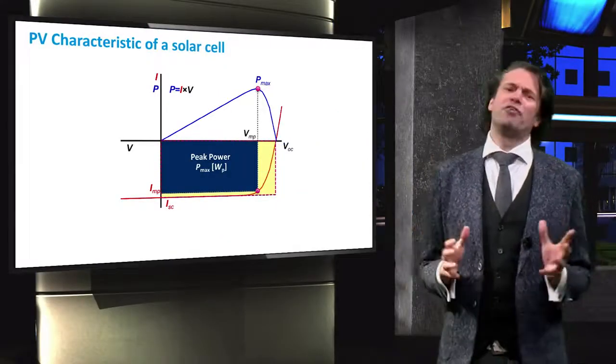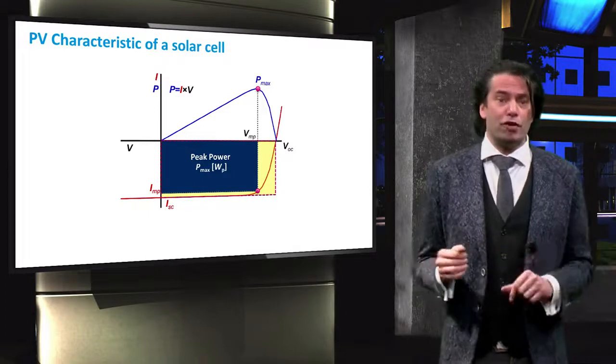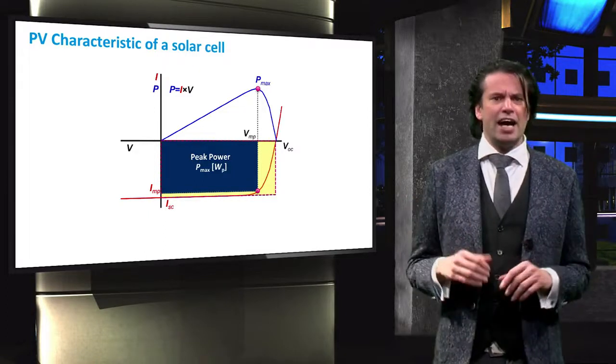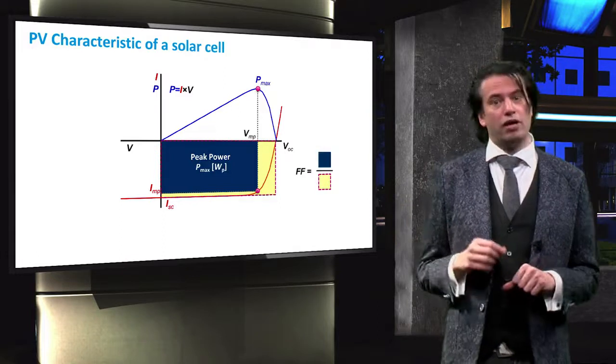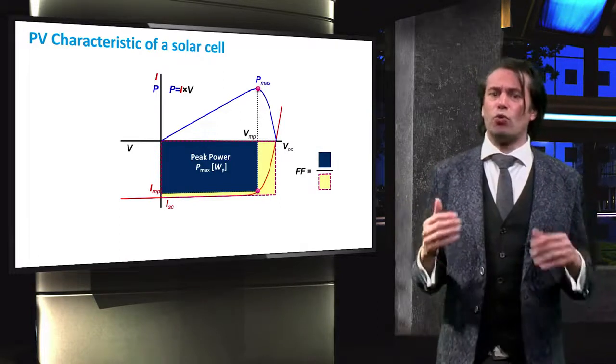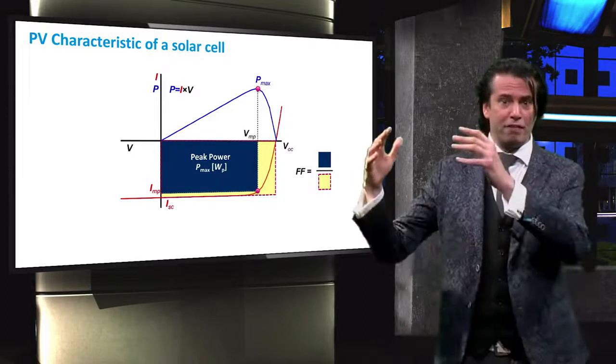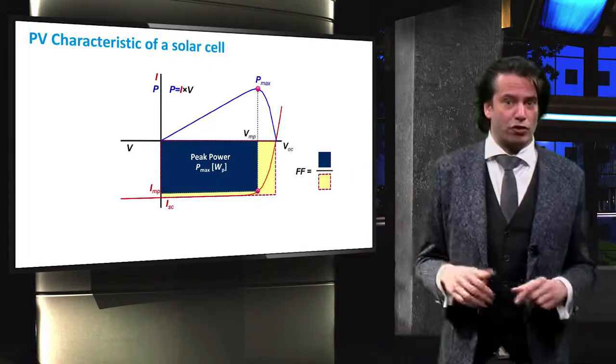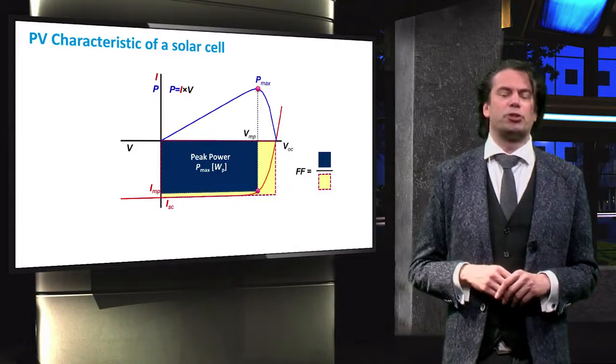We define the ratio of Pmax to the product of VOC and ISC as the fill factor or FF. The fill factor essentially shows the quality of our solar cell. A greater fill factor implies a greater fraction of that theoretical power can be produced.